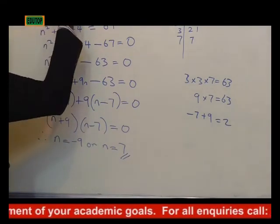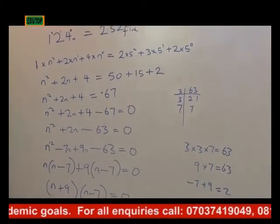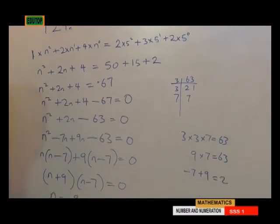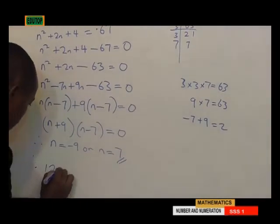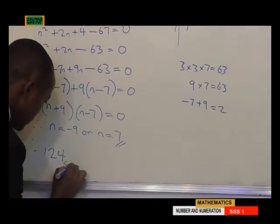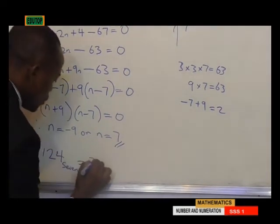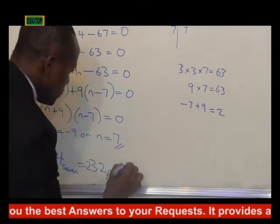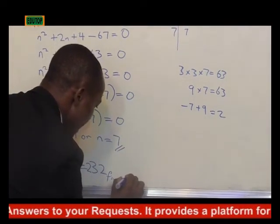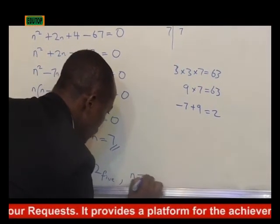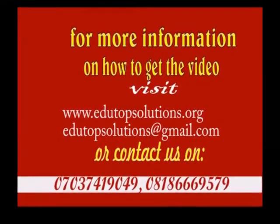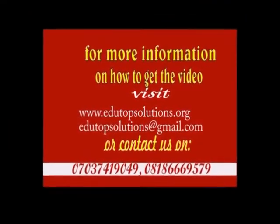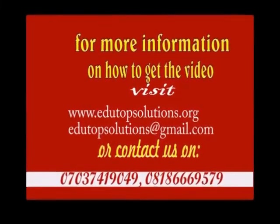Which means 124 base 7 is equal to 232 base 5. Therefore, we can say that from our calculation, 124 base 7 is equal to 232 base 5. Which means our n is equal to 7.